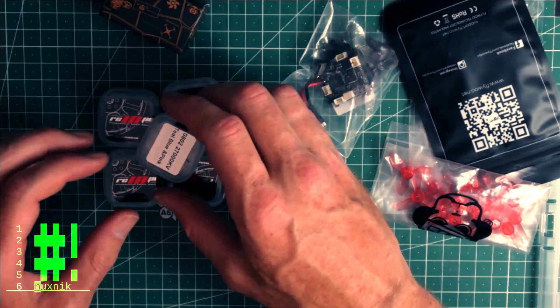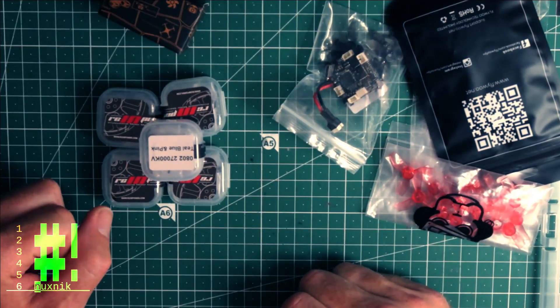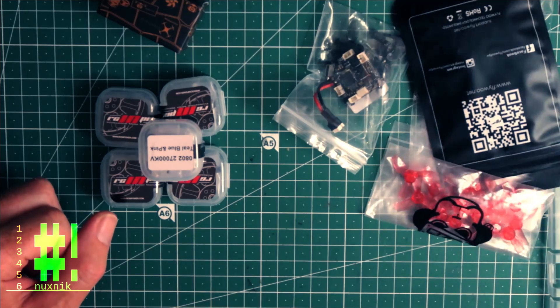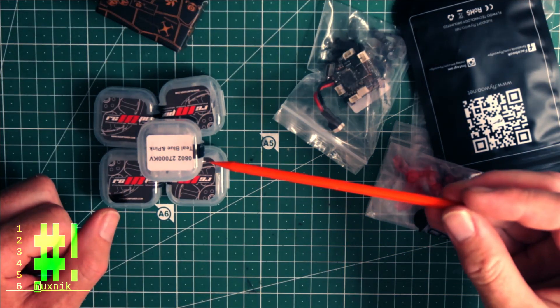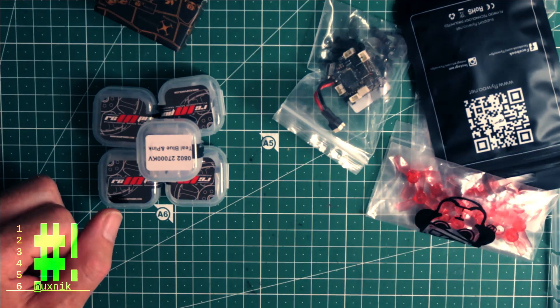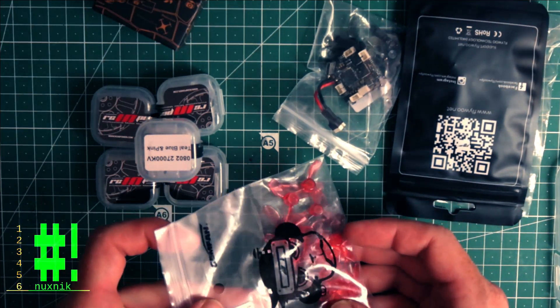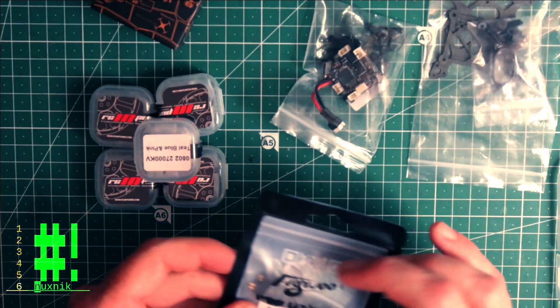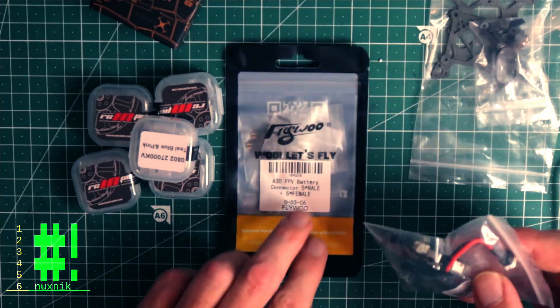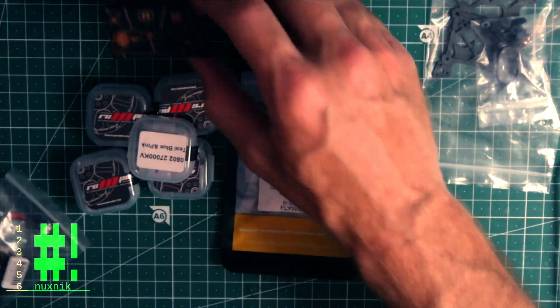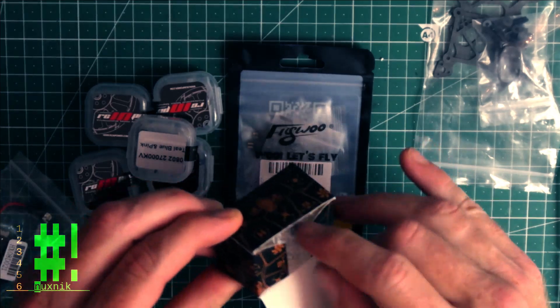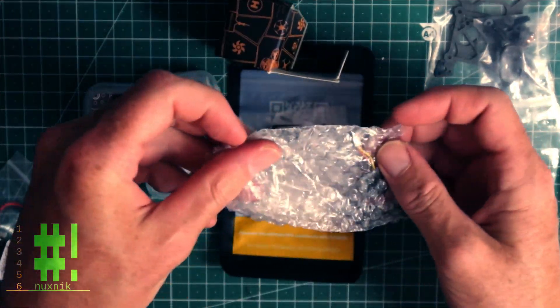You will need 4 RC in Power GTS V3 0802 27000 KV motors. I will be using Gemfan 1608 props. For the battery connector I am using an A30 female connector by Flywoo. You can also use a BT 2.0 female connector by Beta FPV.